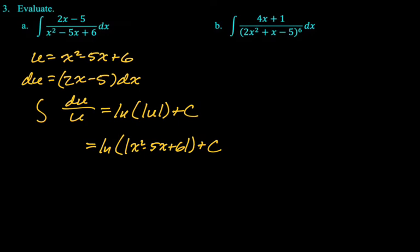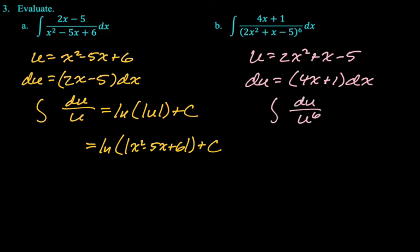For d, it's the integral of 4x plus 1 over the quantity 2x squared plus x minus 5 to the sixth. So I'm going to try again. I'm going to make u equal the quadratic thing, and then du will be 4x plus 1 dx. So this is looking good also. Let's make our substitutions. So our integral becomes du over u to the sixth. I definitely would rewrite that as u to the negative 6 du.